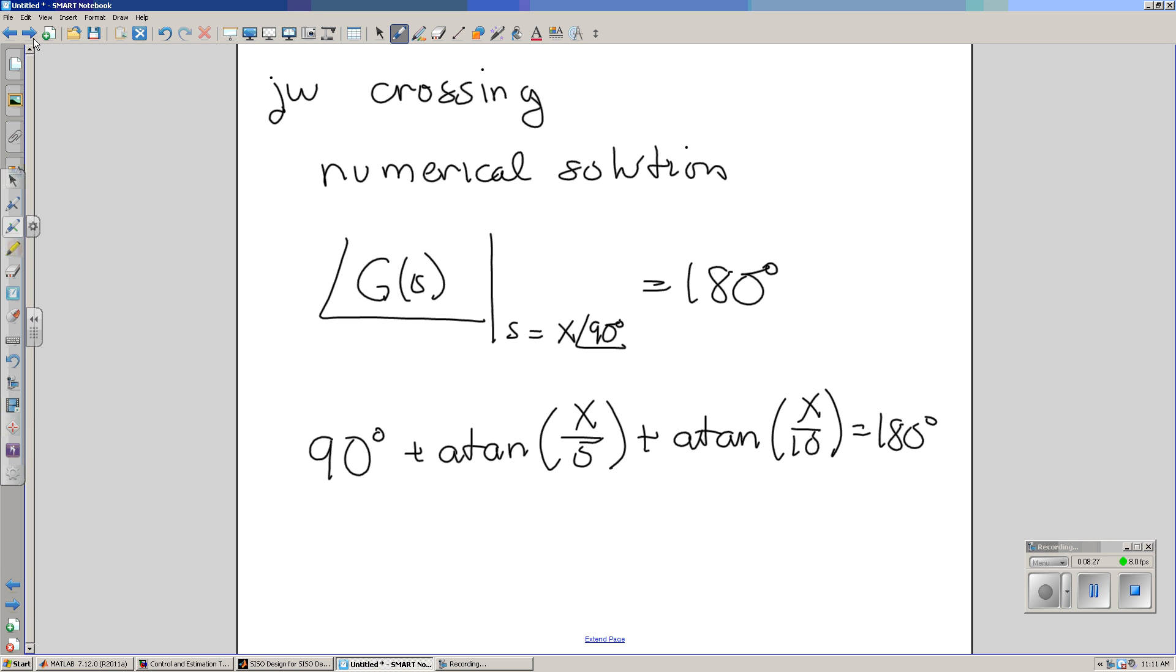That's equal to 90 degrees plus two arctangents. Arctangent is a nasty nonlinear function, has no closed form solution. You have to solve that numerically. Once you get that, you get the j omega crossings.